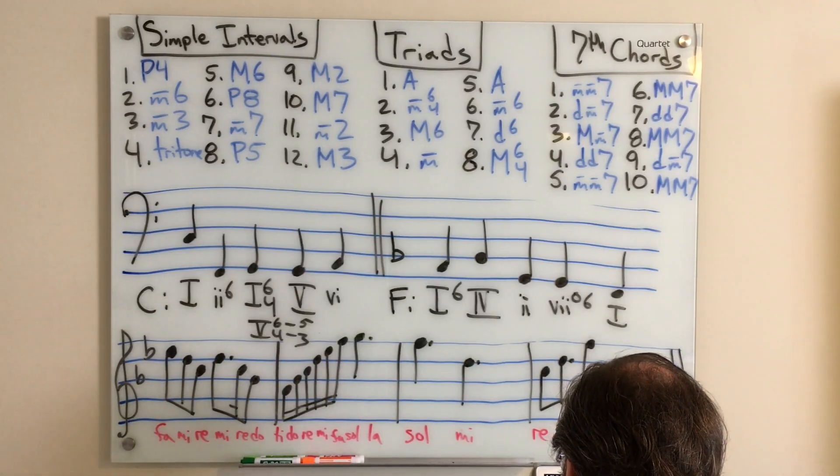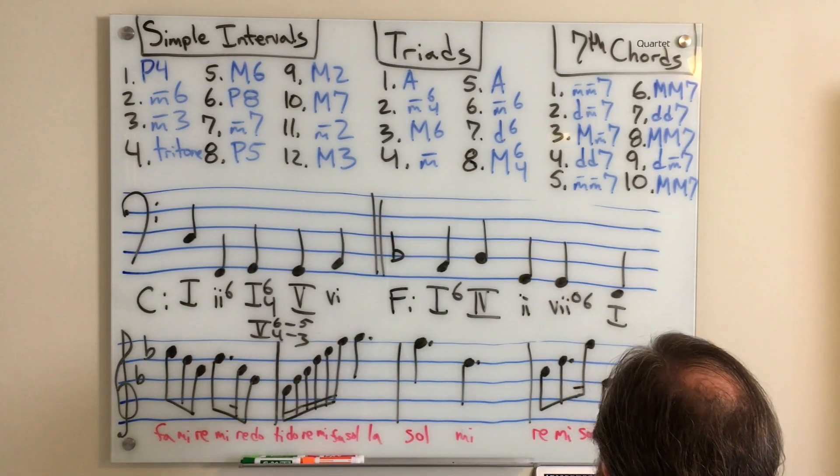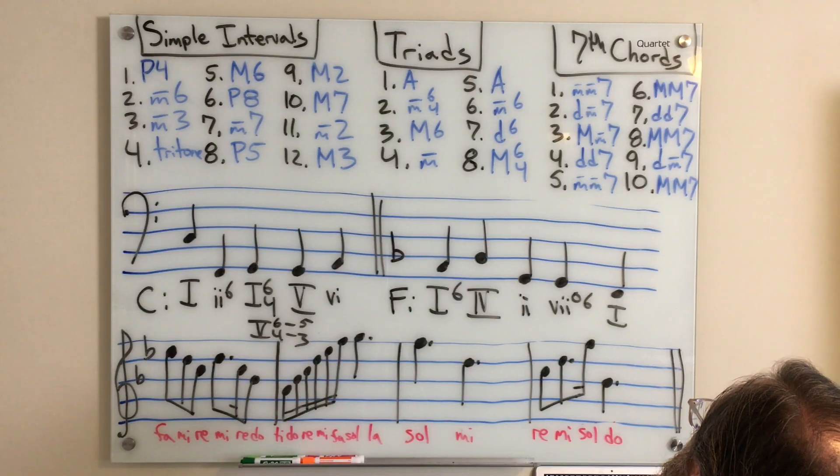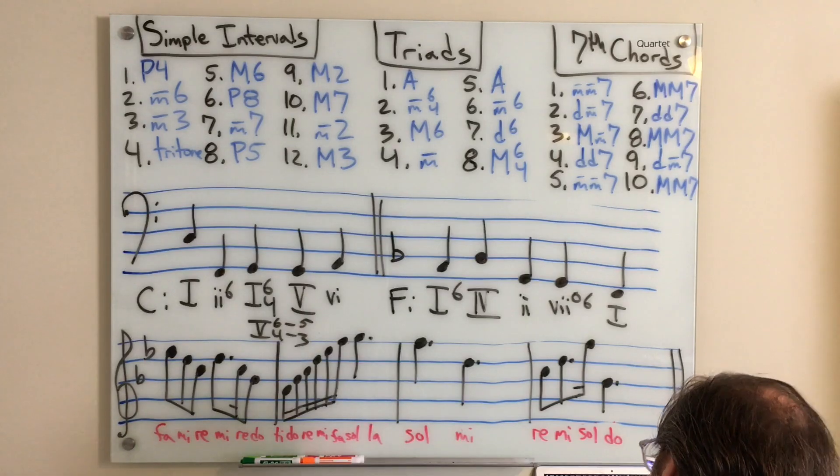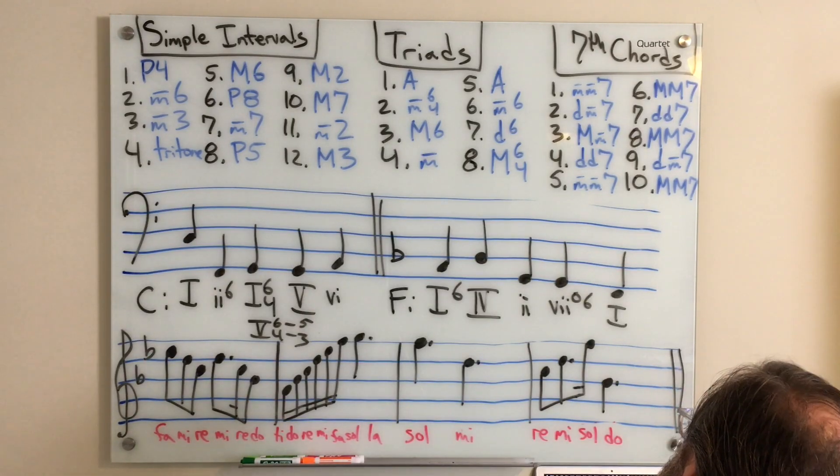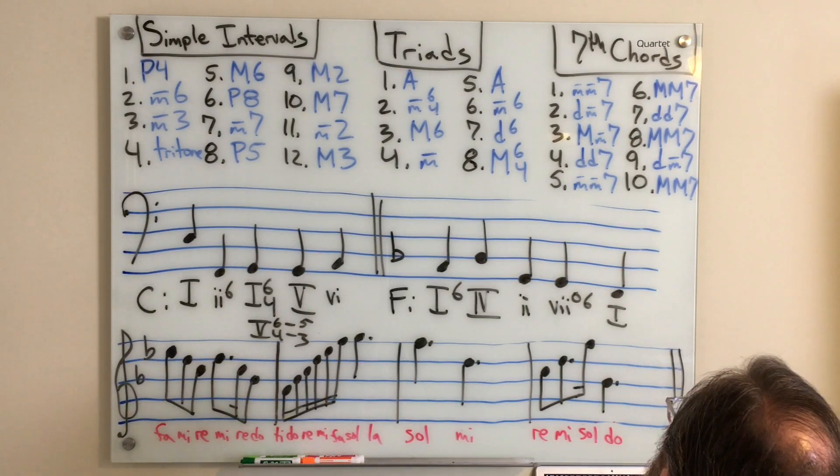So here we go. We're in the key of F major. We start with one six, four, two, seven diminished six, one.